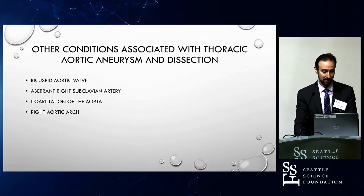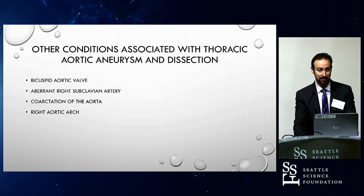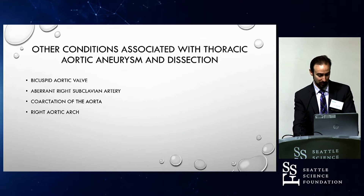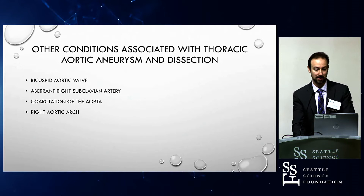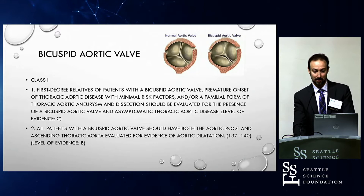Bicuspid valve was mentioned because there is a genetic basis to that. An aberrant right subclavian artery is another one, as are coarctation of the aorta and a right-sided aortic arch. You can see the normal aortic valve with its right and left cusp, and the bicuspid on the right side shows the fusion — the most common type where the right and left cusps are fused — and that's associated with aortic aneurysms.